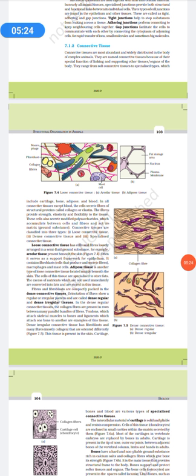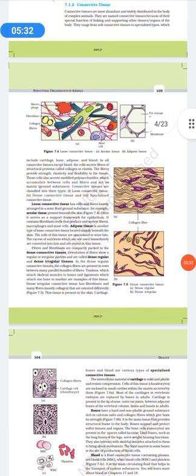In all connective tissues except blood, the cells secrete fibers of structural proteins called collagen or elastin. Fibers provide strength, elasticity, and flexibility to the tissues. These cells also secrete modified polysaccharides, which accumulate between the cells and the fibers and act as a matrix. Connective tissues are classified into three types: loose connective tissue, dense connective tissue, and specialized connective tissue.